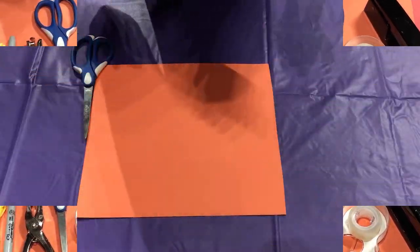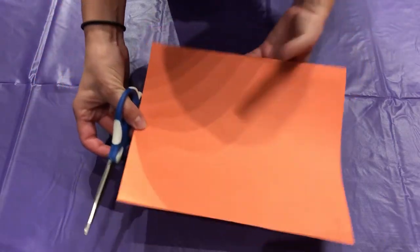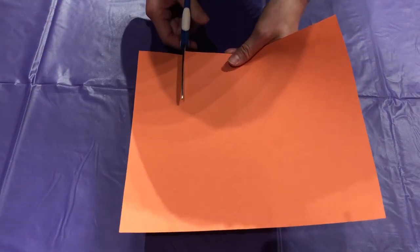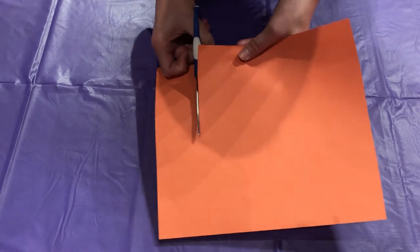Okay so let's go ahead and get started. First thing we're gonna do is cut out the feathers and the beak of the bird.